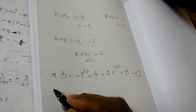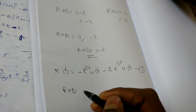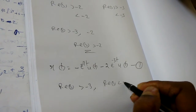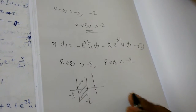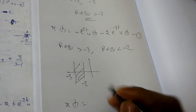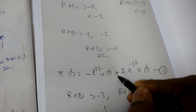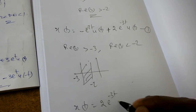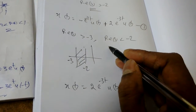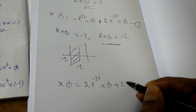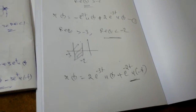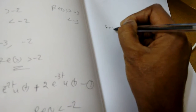The second case: Re(s) > -3 and Re(s) < -2. The common ROC exists between -3 and -2. Here, for the pole at -3 with Re(s) > -3 we get a causal term, and for the pole at -2 with Re(s) < -2 we get an anti-causal term. So x(t) = 2e^(-3t)·u(t) + e^(-2t)·u(-t).